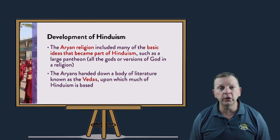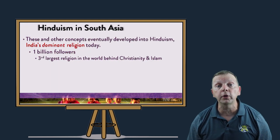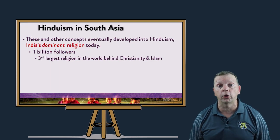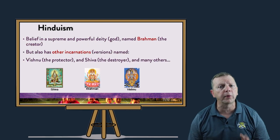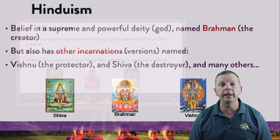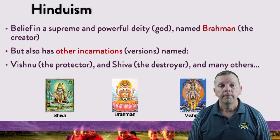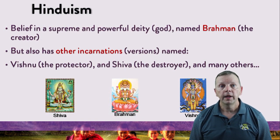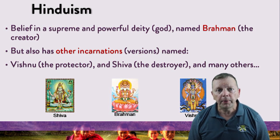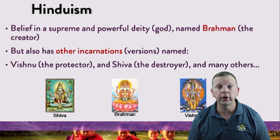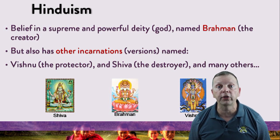From the Aryans, Hinduism has become the dominant religion in India with over 1 billion followers. It is now the world's third largest religion. Hinduism believes in the supreme god known as Brahman. However, Brahman can take on the form of many other gods, such as Vishnu and Shiva and many others. Now, the number of different gods varies between the different Hindu sects, but the number ranges from 33 core deities to well over 33 million.